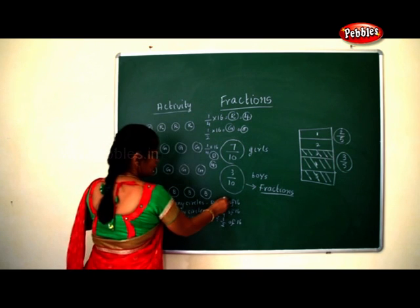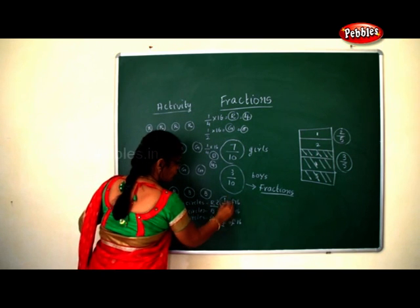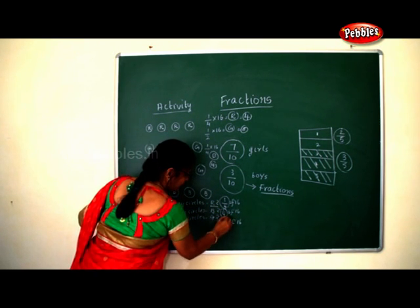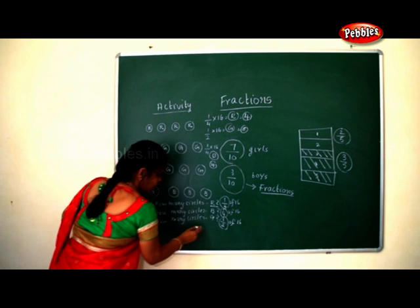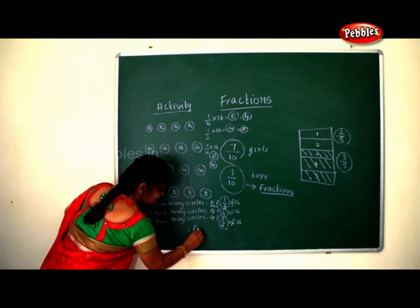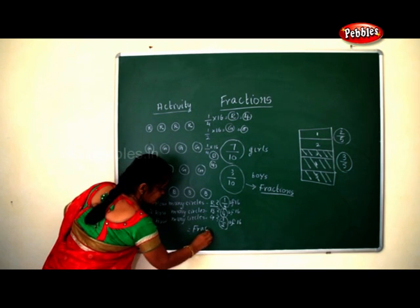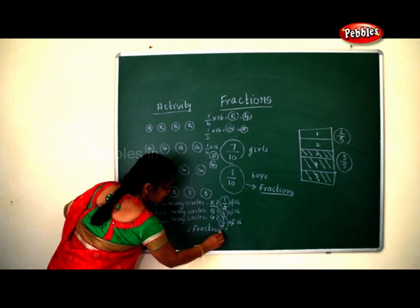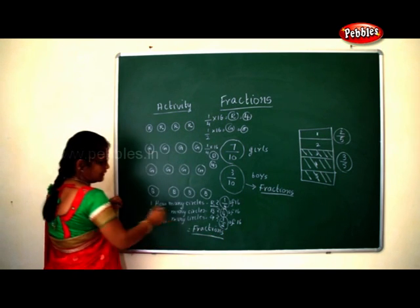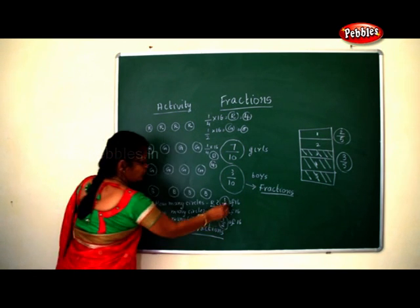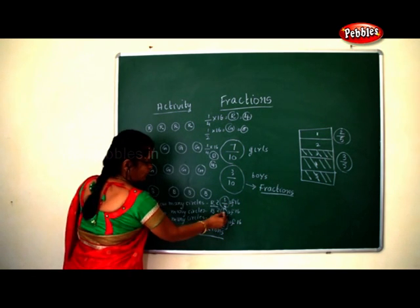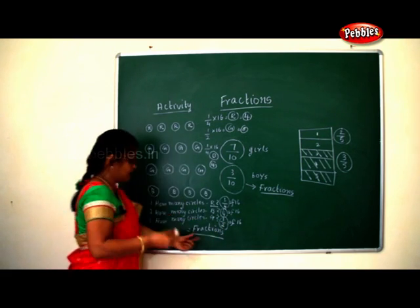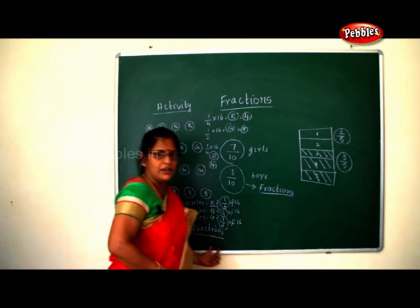So this is what you call a fraction — one by four and one by two is what you call a fraction.